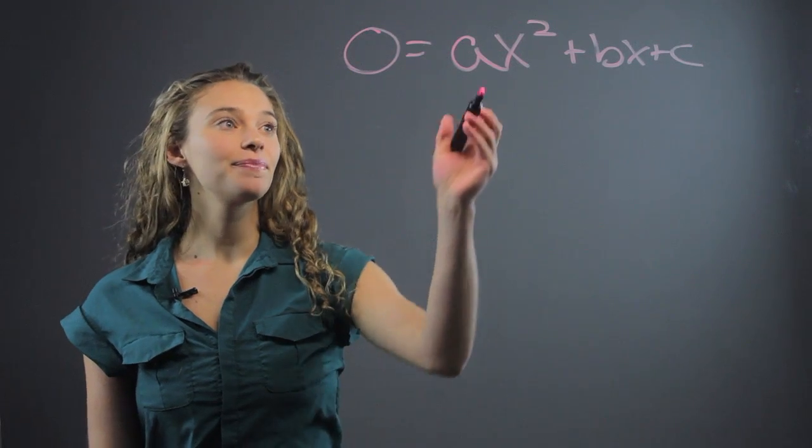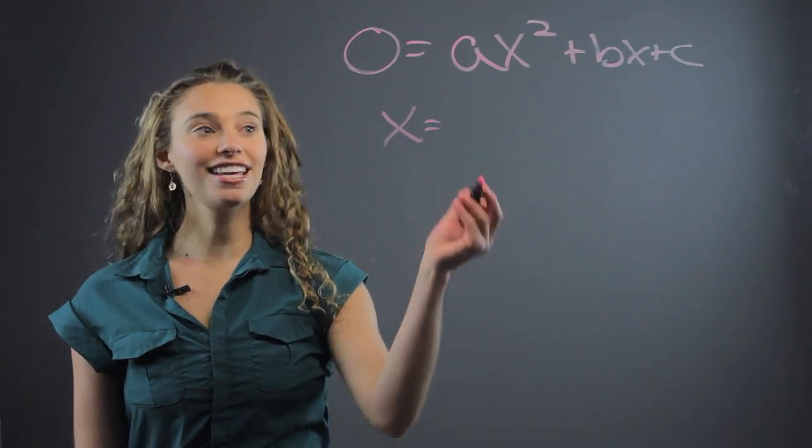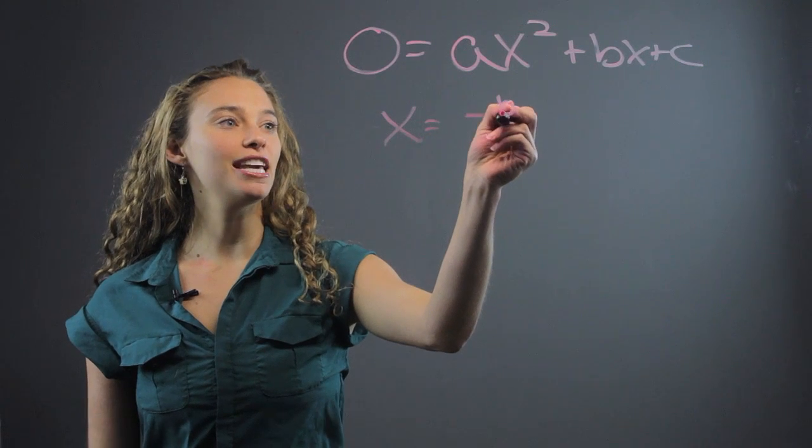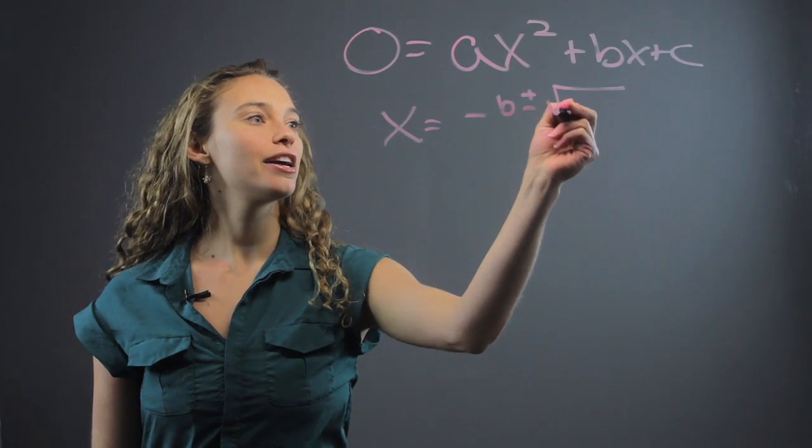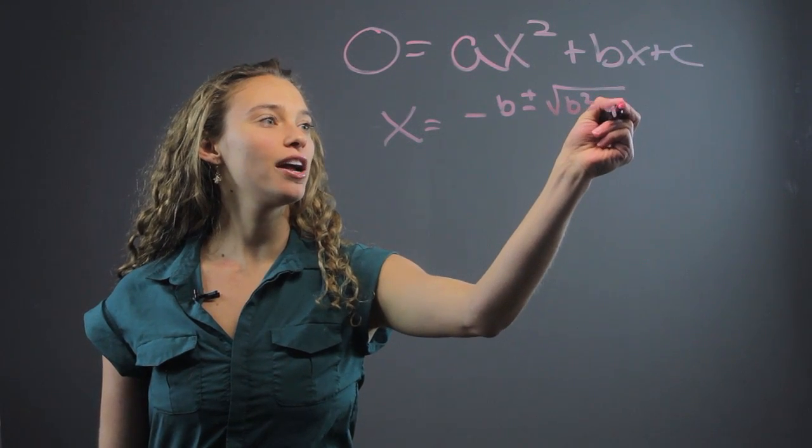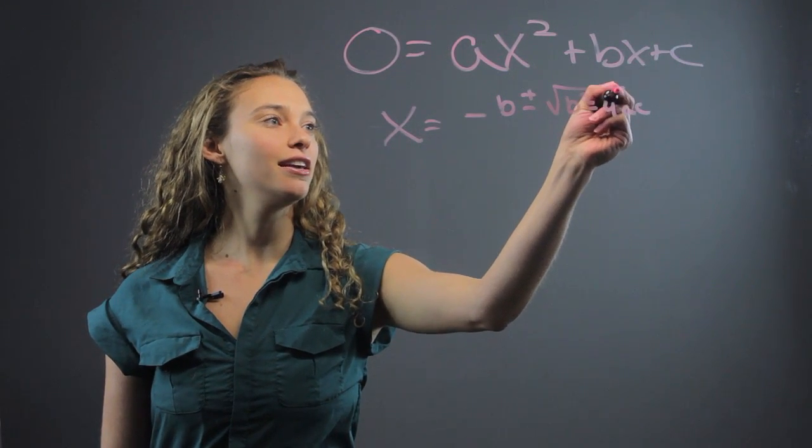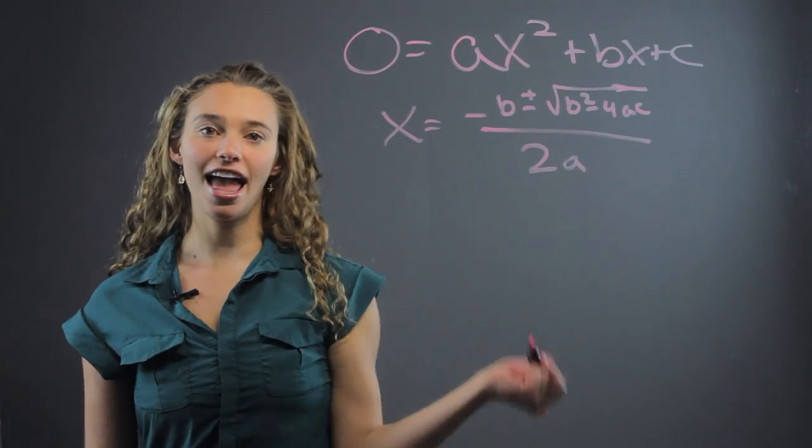The quadratic formula is solving for x. We write it like this, negative b plus or minus the square root of b squared minus 4ac, all in the square root, divided by 2a.